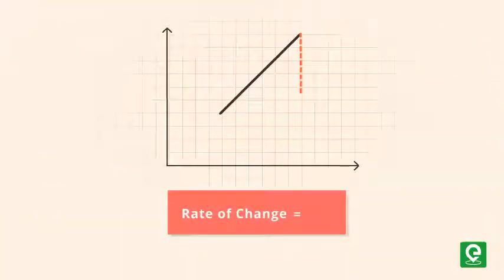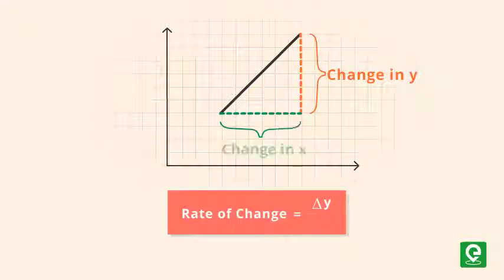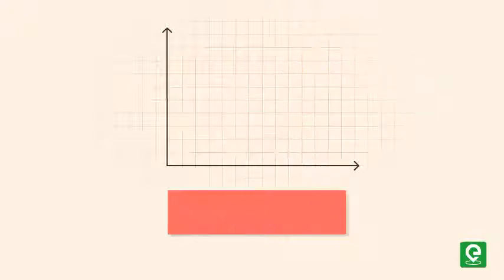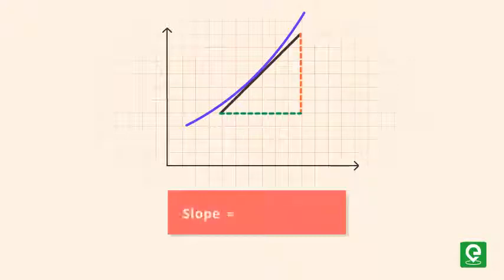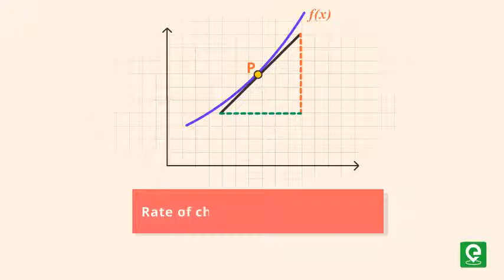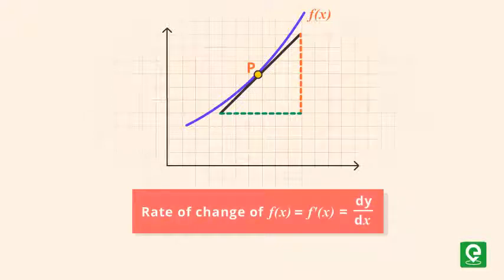Generally, we express rate of change as the ratio of change in value of one variable to the corresponding change in value of another variable. Graphically, the slope of any line represents rate of change. In calculus, rate of change is written as f'(x) or dy/dx.